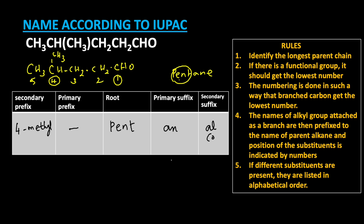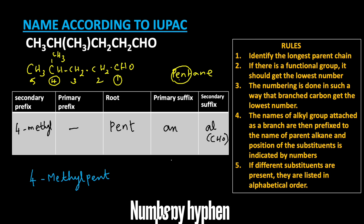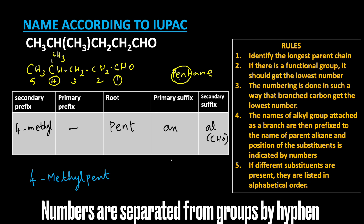Because the CHO group is present, we can now write it all together. The IUPAC name of the given compound is 4-methylpentanal.